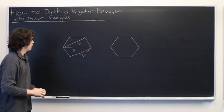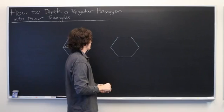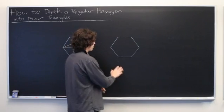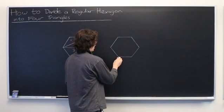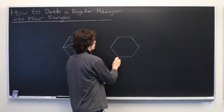So, the second method that one can use to divide a regular hexagon into four triangles, pick any vertex at all, we'll just go with this one, and then draw a line from that to every other vertex.